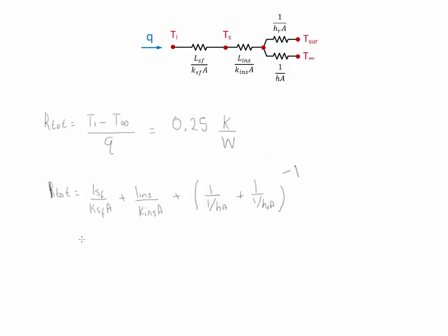Now, in this equation, we know all the values: the total resistance, the values of K, the areas, the values of h and hr. The only quantity we don't know is the insulation thickness, which we can calculate.